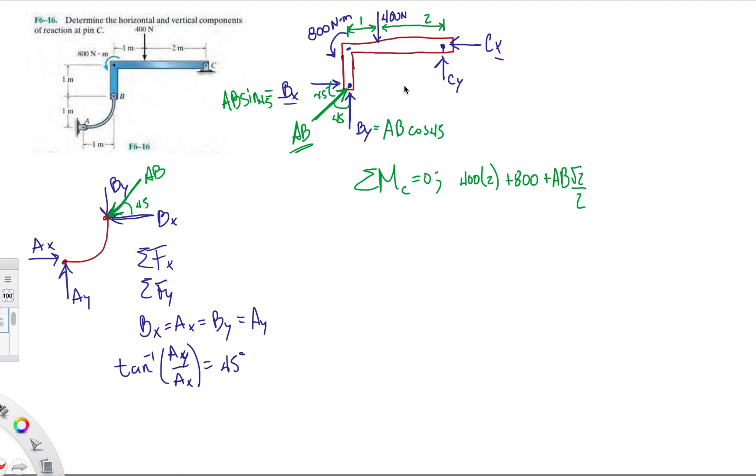And then BY is making it rotate counterclockwise, so minus AB square root of 2 over 2 times the distance of 3. And I think that's it for the forces that contribute moment.